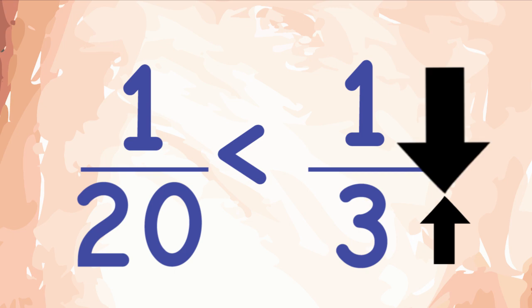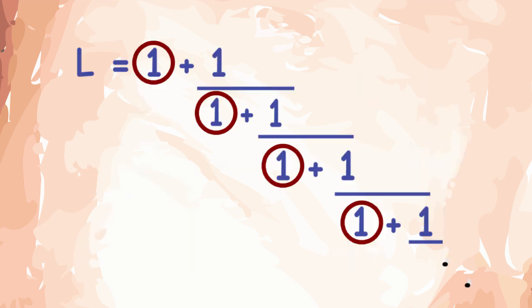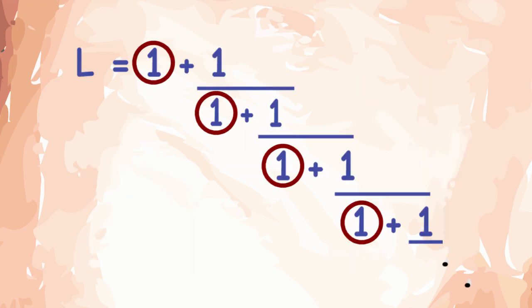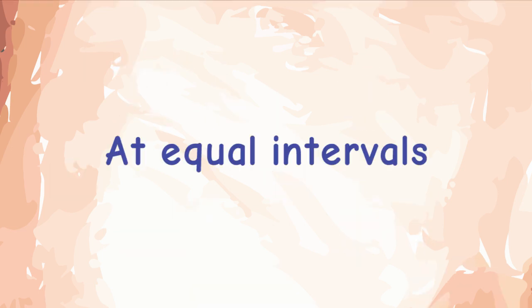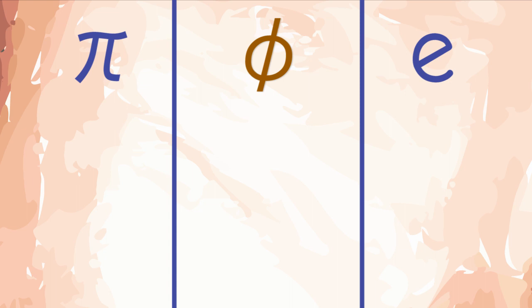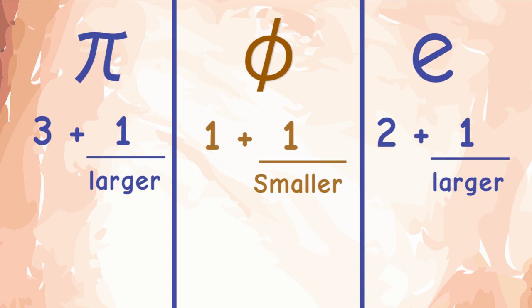Correlating this idea to our Continued Fraction expansions, you can see that the golden ratio has all 1s in the denominators, while other irrational numbers have larger denominators as well. So, truncating at equal intervals, the golden ratio will have a smaller denominator in comparison to other irrational numbers. And then the reciprocal will look like this.